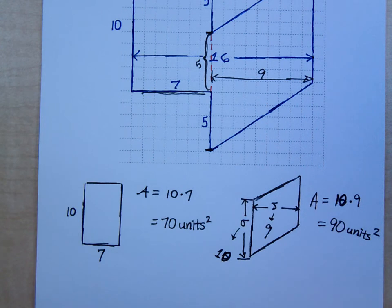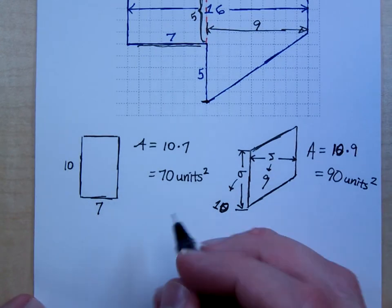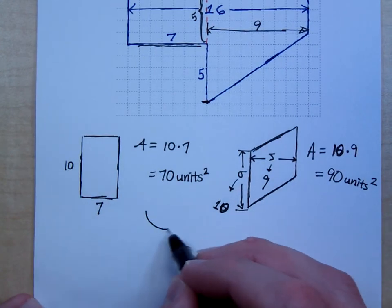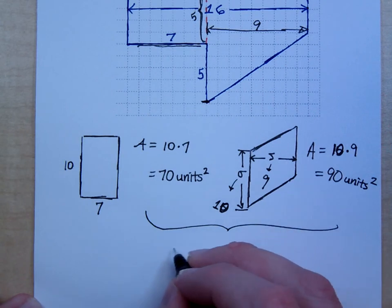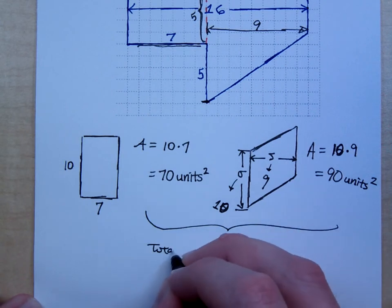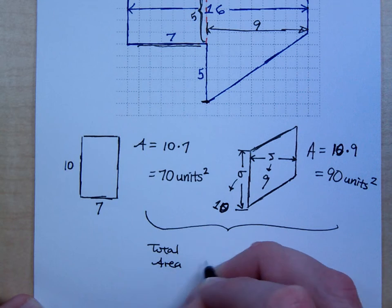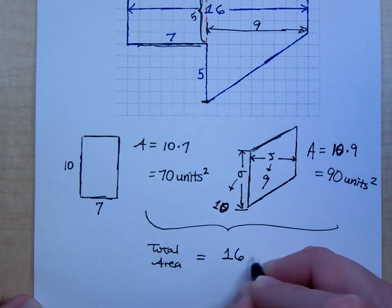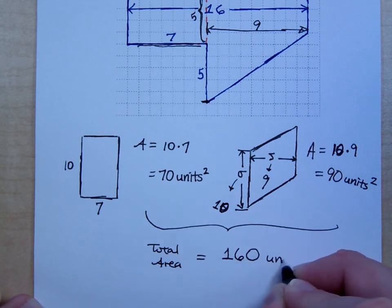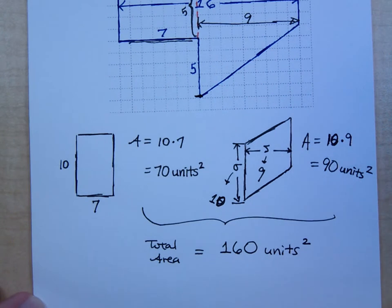So when I combine these two areas, the total area equals 70 plus 90, which is 160 square units.